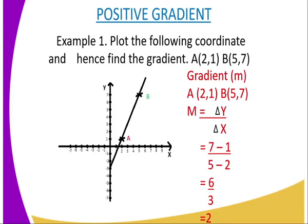And how do we look for the gradient? The formula for calculating the slope is gradient equals change in y over change in x. You take the value of y in coordinate B, that is 7, then subtract the value of y in coordinate A, that is 1. 7 minus 1 equals 6. The denominator is change in x: 5 minus 2 equals 3. Therefore 6 divided by 3, you get the answer as 2. The positive gradient is 2.